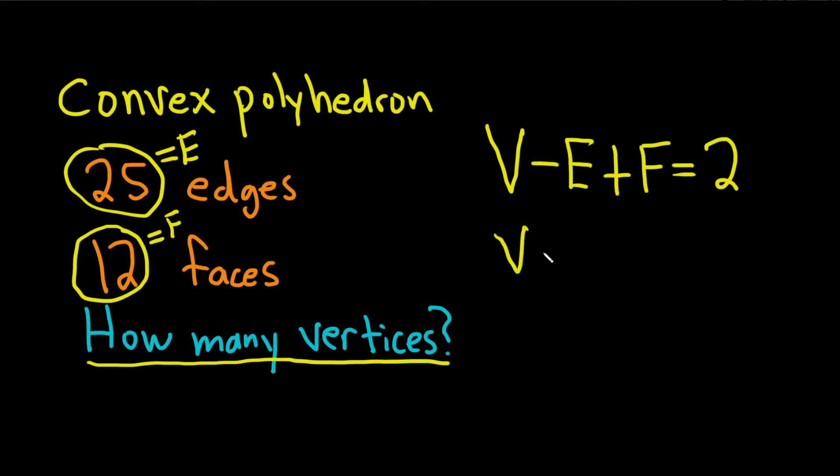So we have V minus 25 plus 12, which is our faces, and that's equal to 2.